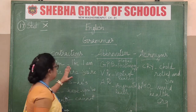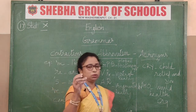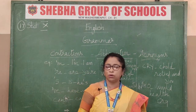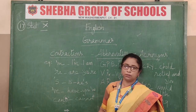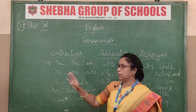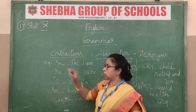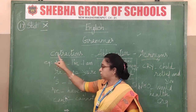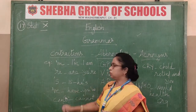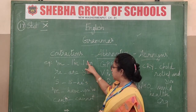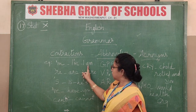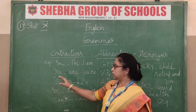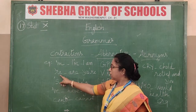First, we come to contractions. Contraction means you are going to shorten a word. For example, 'I am' is shortened to 'I'm' — the 'a' is missing, so we place an apostrophe where the missing letter was. Whenever a letter is dropped, you must put the apostrophe on top of that missing part.